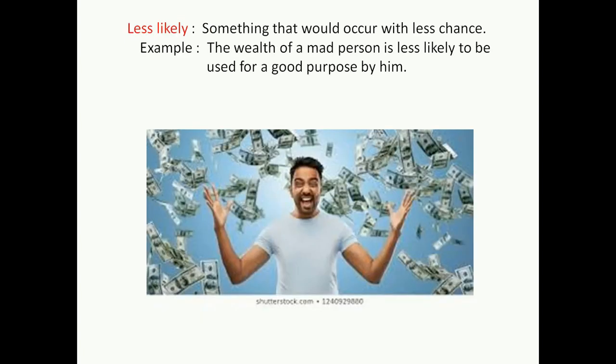Next is 'less likely' — something that would occur with less chance. There is a very less chance for this situation to occur. For example, the wealth of a mad person is less likely to be used for a good purpose by him. When he is mad, there are definitely less chances that he will use the wealth for a good purpose.